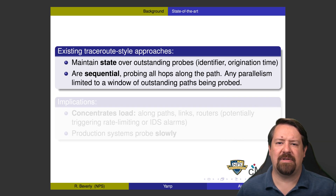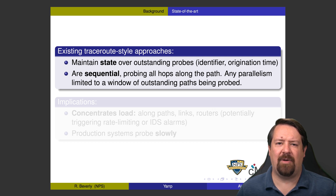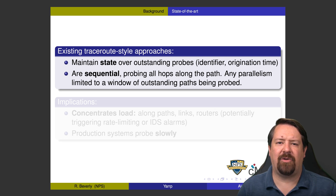The question is: why is traceroute slow? The answer is that, one, it must maintain state — the more outstanding probes it has, the more state it would have to maintain. And importantly, it's sequential: it probes a hop or a few hops and waits for those responses to come back before probing the next hops. So waiting on those round-trip times for outstanding probes rapidly adds up to make performing traceroutes quite time consuming.